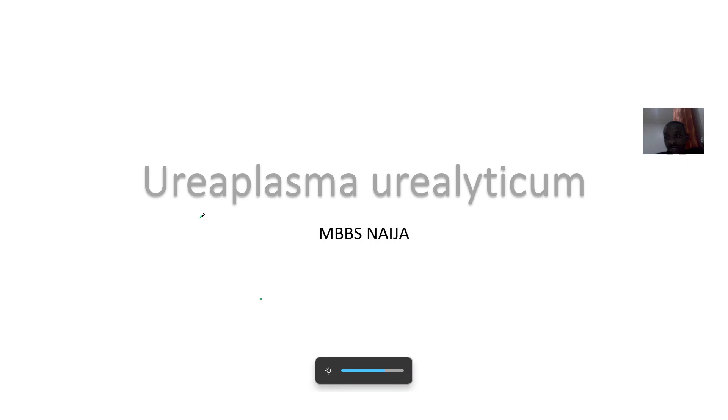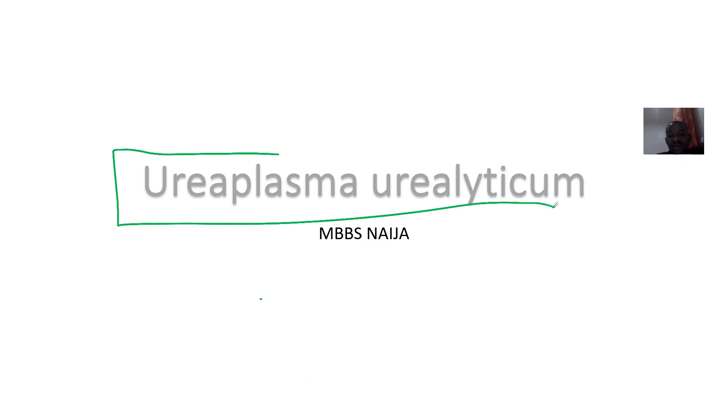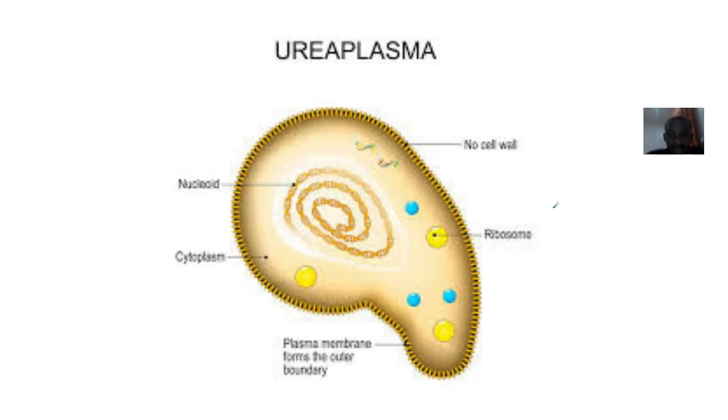We'll continue to talk about all the members of the mycoplasma family. The next one we should be talking about is Ureaplasma urealyticum. You can basically see the image here.